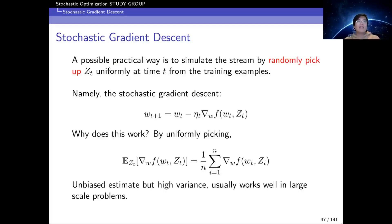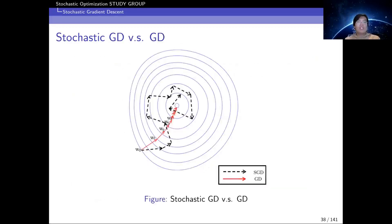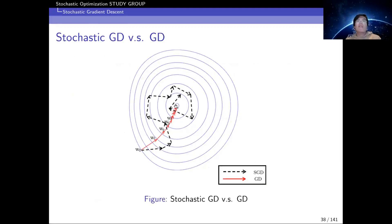Looking at SGD's performance compared to gradient descent in a contour plot: the red curve is gradient descent and the black lines are SGD. We can see that SGD goes toward the minimum in a very random way, since a single gradient sample does not always produce the right direction.